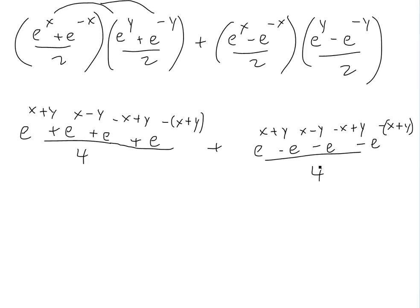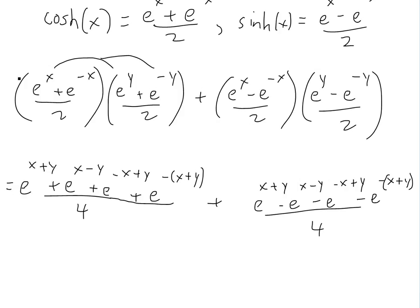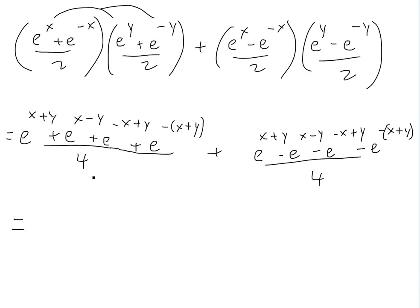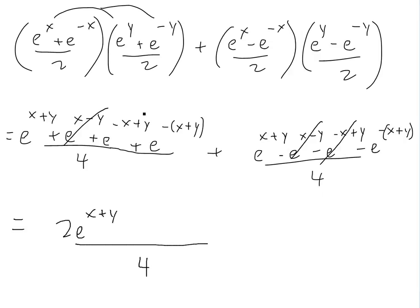Now we add up and cancel like terms over the common denominator of 4. e to the x plus y plus e to the x plus y gives 2e to the x plus y. The e to the x minus y terms cancel (one positive, one negative). The e to the negative x plus y terms also cancel. The e to the negative (x plus y) terms are both positive — note that negative e to the negative x times negative e to the negative y gives a positive — so they add to give 2e to the negative (x plus y).